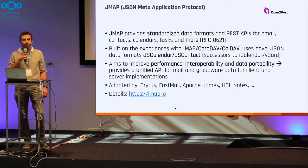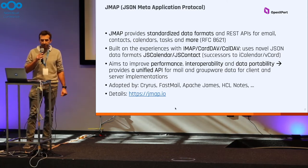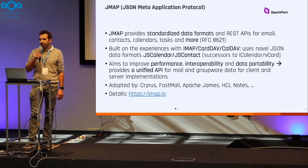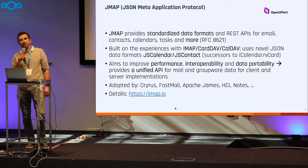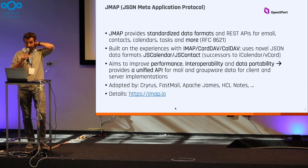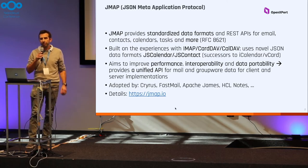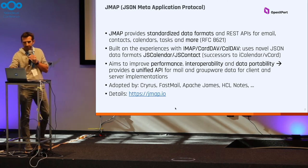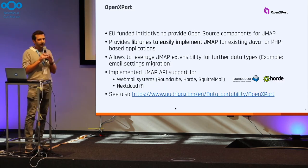The goal of JMAP is to improve performance, interoperability, and data portability by providing a unified API for mail and groupware data. It has been adopted by various projects like Cyrus, FastMail, and HCL Notes, and is also currently being considered for Thunderbird and Apple Mail. More details can be found at jmap.io.